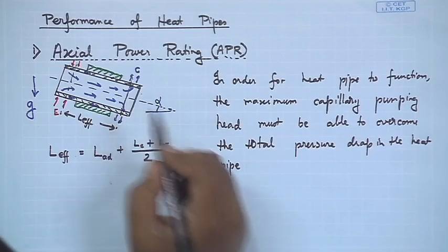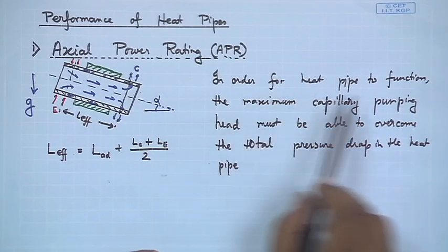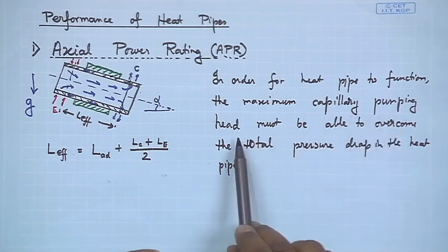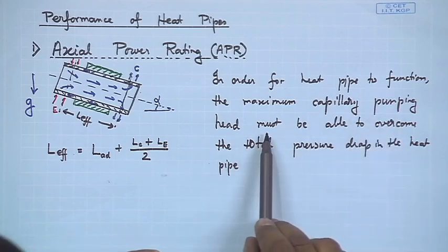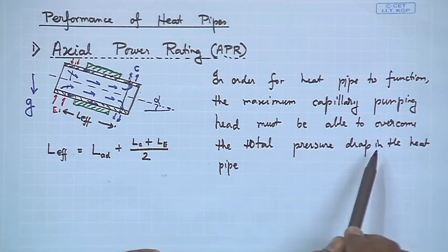Welcome. We will continue our discussion on heat pipes. Last time we started to derive an expression for the maximum amount of heat that can be pumped by a heat pipe from its evaporator to the condenser end, which is known as the axial power rating. For the heat pipe to function, the maximum capillary pumping head provided by the wick must overcome the total pressure drop of the fluid as it flows through the heat pipe.